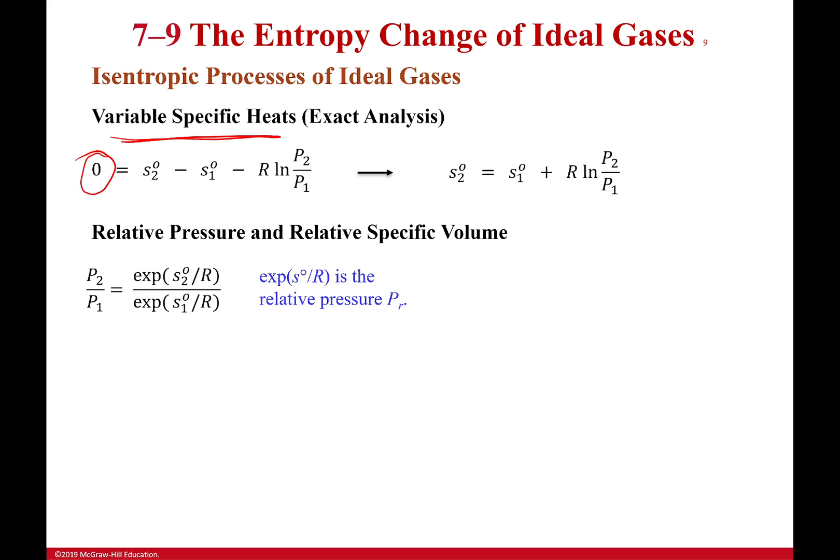So what we do is we say, okay, this term right here, the exponential of S2 divided by my specific gas constant, over the exponential of S1 divided by my specific gas constant, is equal to this ratio of pressures.